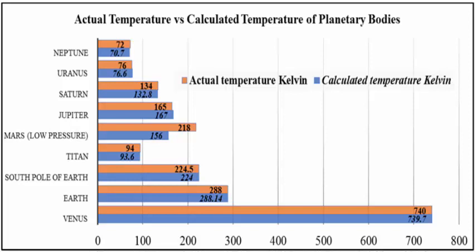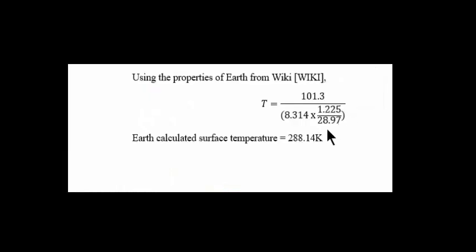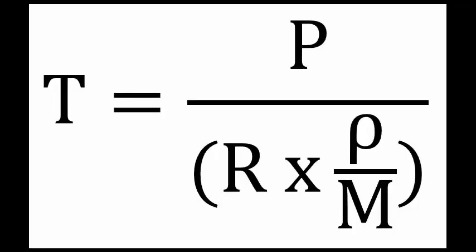Using the properties of Earth from Wikipedia, we'll start with 101.3 kPa of pressure, 1.225 kg/m³ density, and the average molar mass 28.97. That gives us a calculated surface temperature on Earth of 288.14 Kelvin.